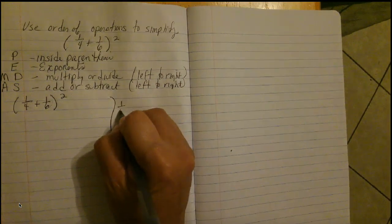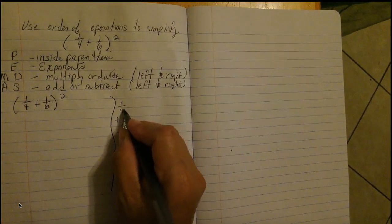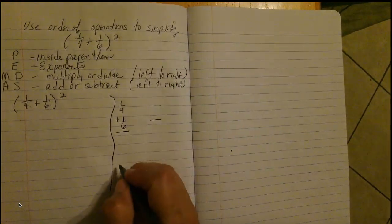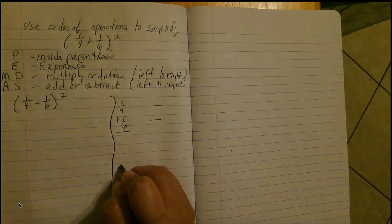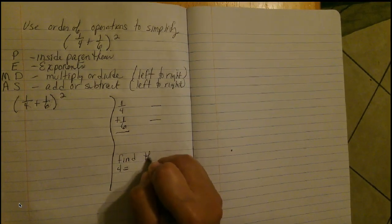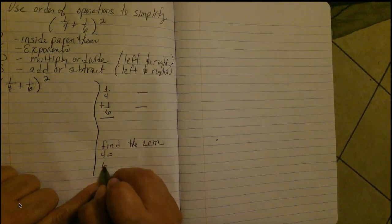I have one-fourth plus one-sixth. In order to add fractions, you need to have a common denominator. So, let's look at our list of multiples.